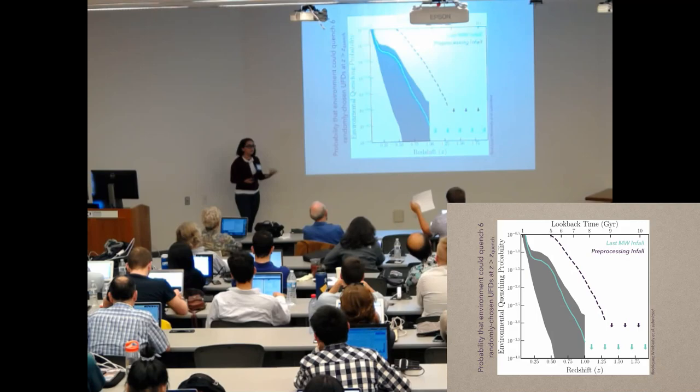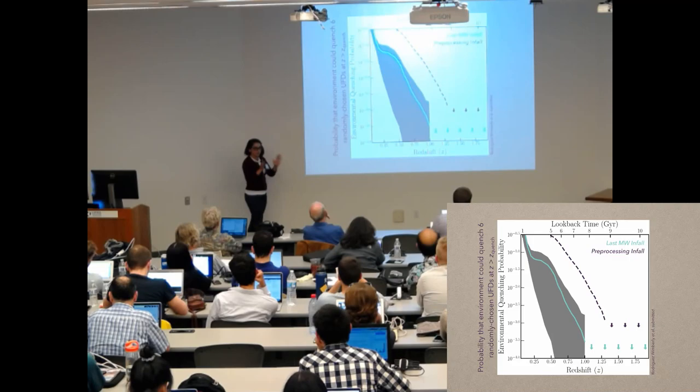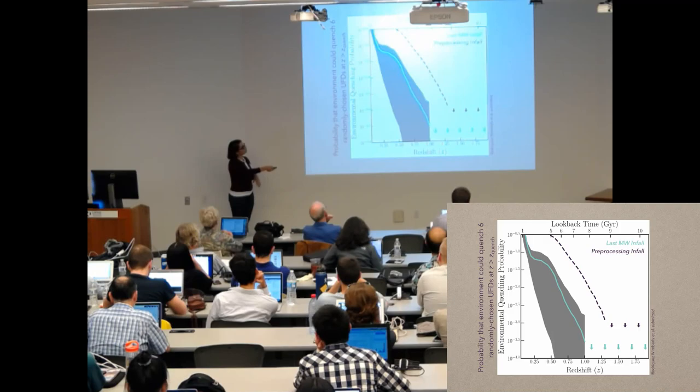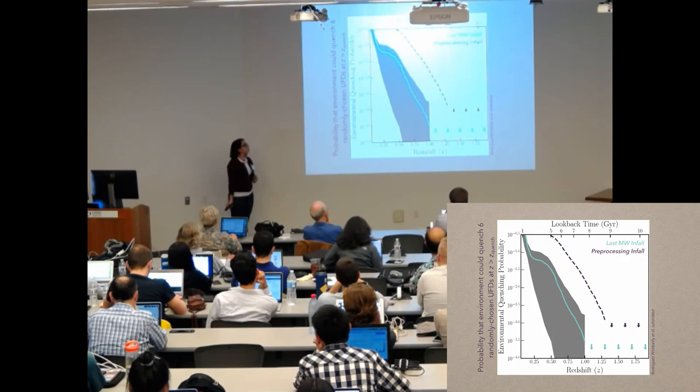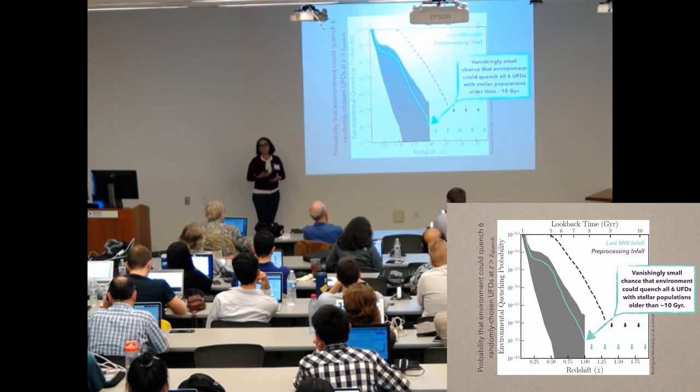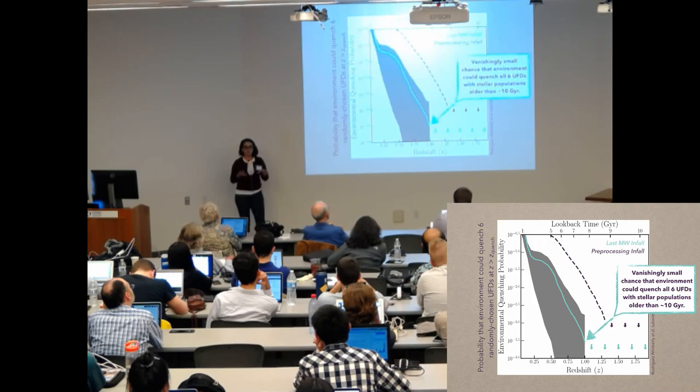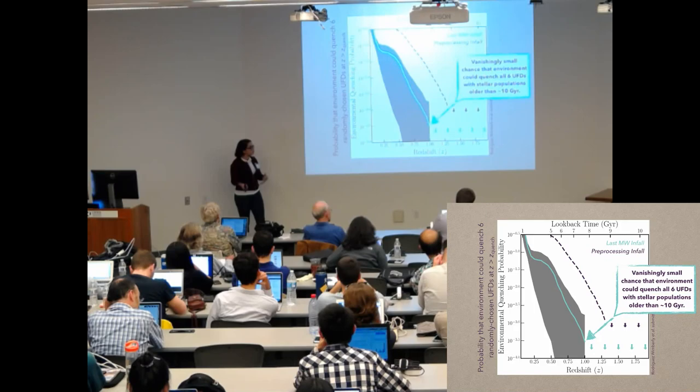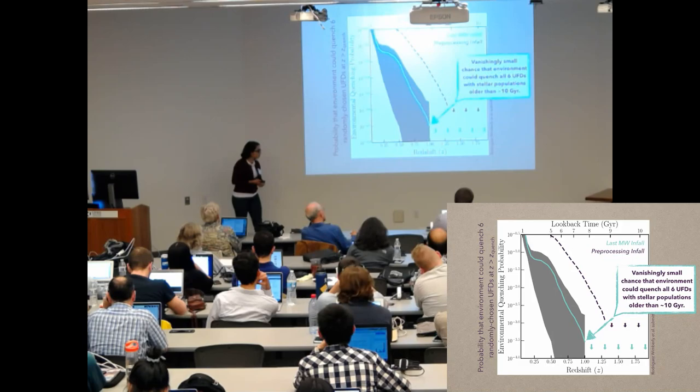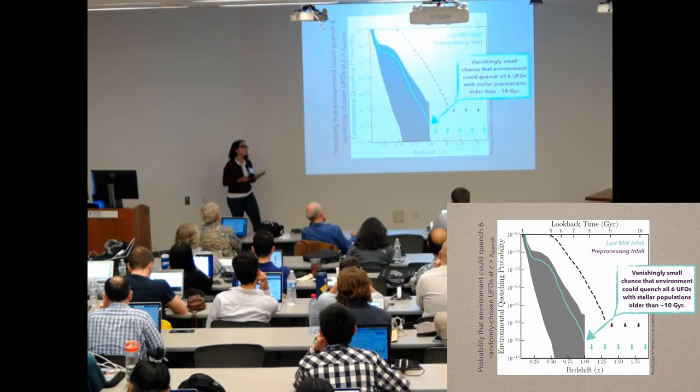So on the vertical axis, we have the probability of environmental quenching, which is very similar to accretion, and then time and redshift on the horizontal. As you can see, when we look at the last Milky Way infall, there's a vanishingly small probability that environment could have quenched all six of the randomly selected subhalos so that they would be what we observe, which is having stellar populations that are greater than 10 gigayears old. So this is kind of pointing to the fact that environment did not play a big role in quenching these star formations.